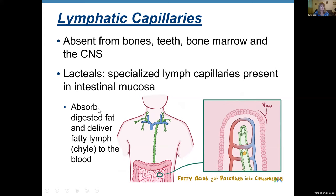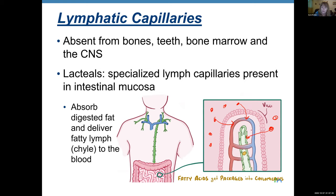Lacteals absorb digested fat and deliver this fatty lymph — called chyle — to the blood. In the villus of the small intestine, nutrients are absorbed into blood capillaries and delivered first to your liver and then to all your organs. But fat — which is a bit bigger — is absorbed by lacteals. It goes into the lacteals with the lymph, and is delivered into your circulation. So those are special lymphatic capillaries.